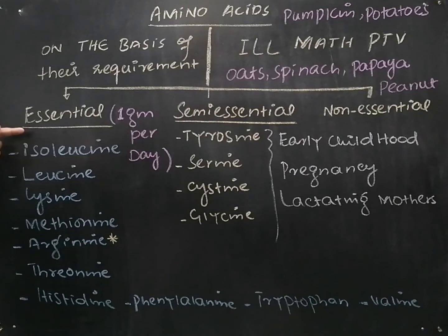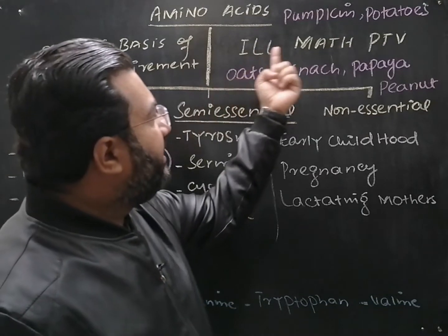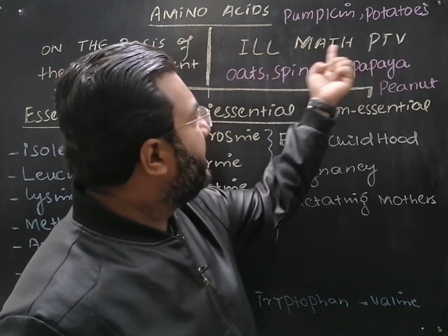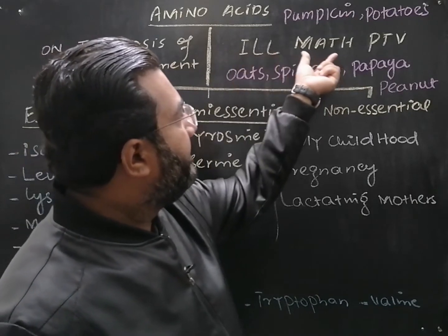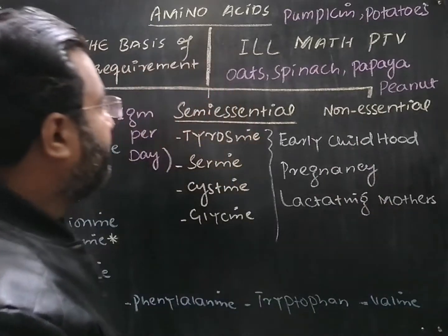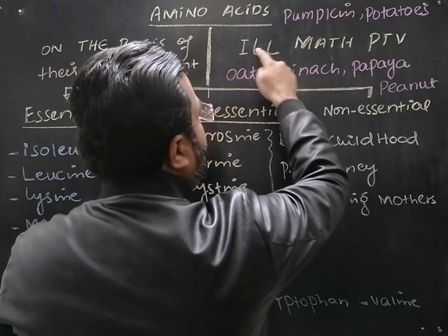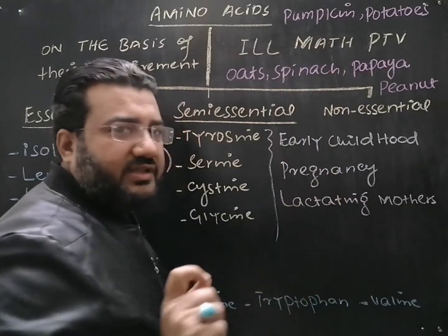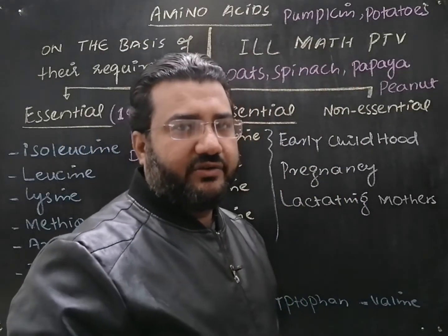Now, what is the list of essential amino acids? In order to memorize the list of essential amino acids, I have made a key. You will have to memorize three words: ILL, MATH, and PTV. These are a total of 10 letters, and each letter represents the first letter of the name of an essential amino acid.